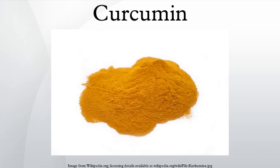Preliminary research has found that curcuminoid binds to amyloid proteins associated with Alzheimer's disease. Because curcumin increases fluorescent activity after it binds to amyloid protein, curcumin is being studied as a possible identifier. Tests have detected amyloid proteins in human eyes, offering the possibility that simple eye exams could provide early detection of the disease.